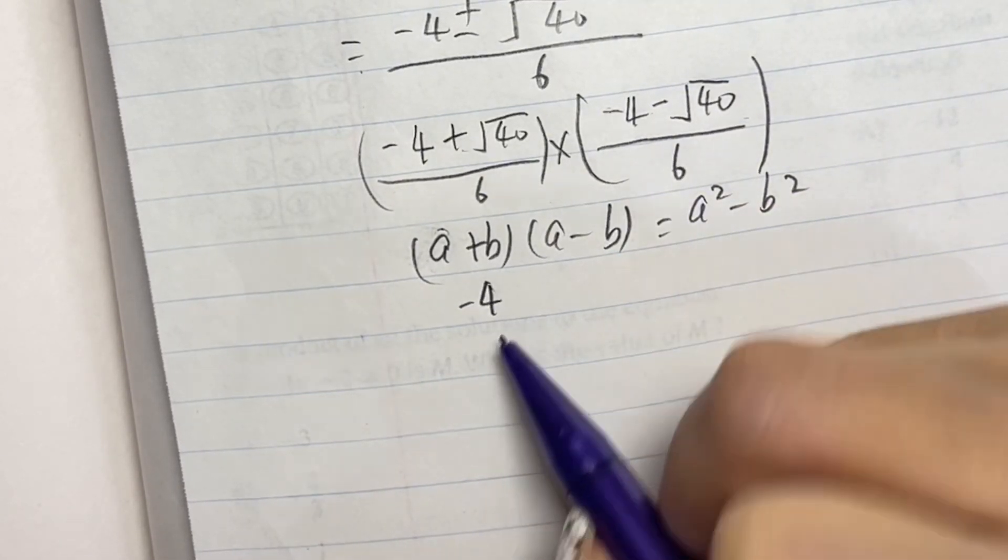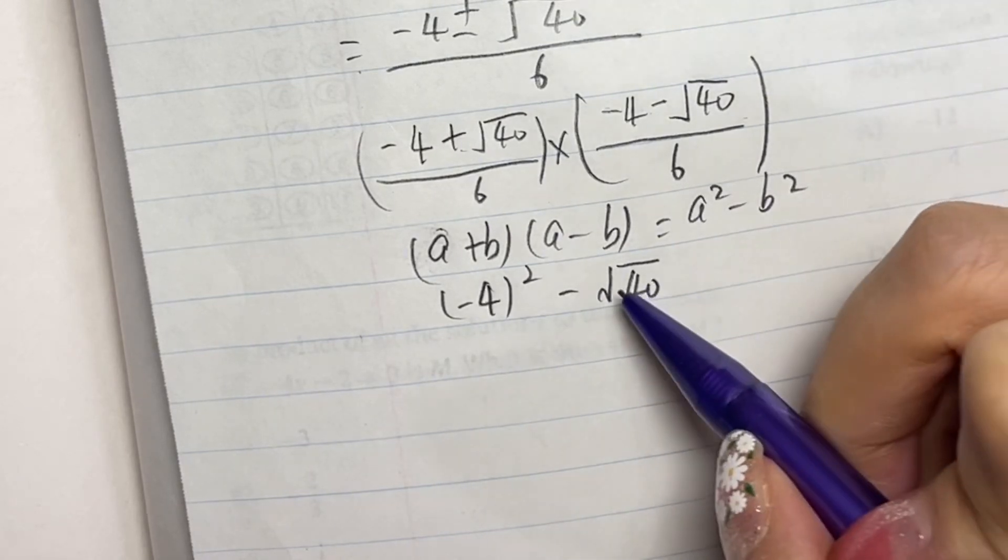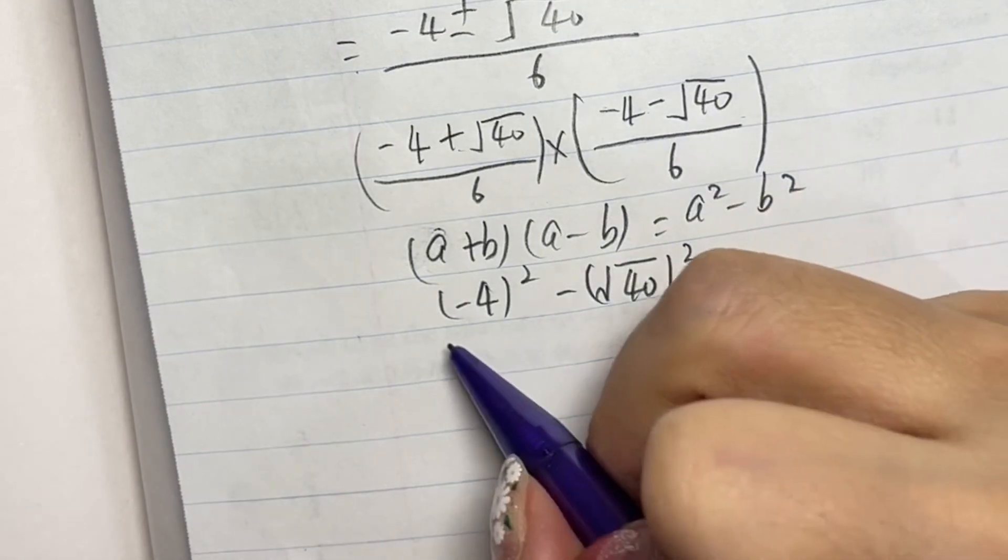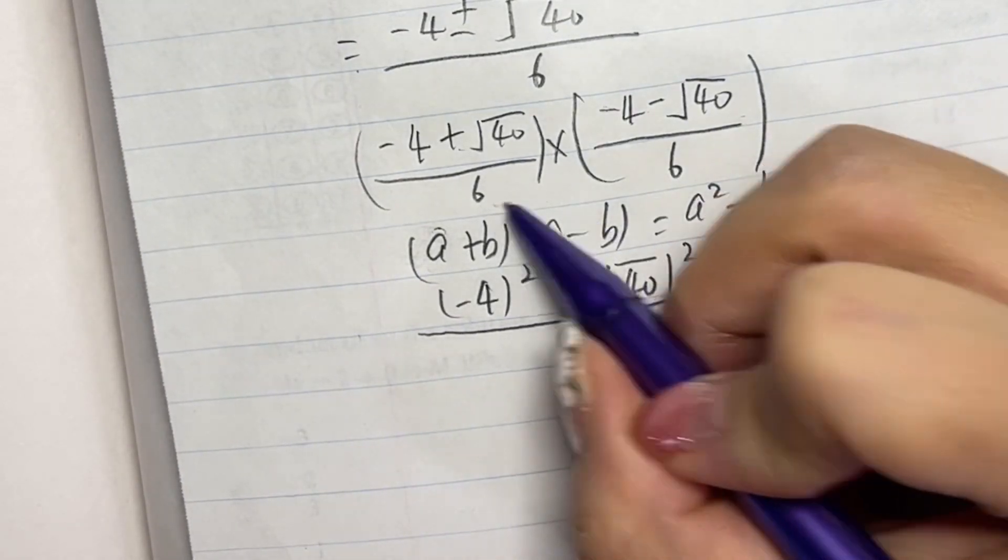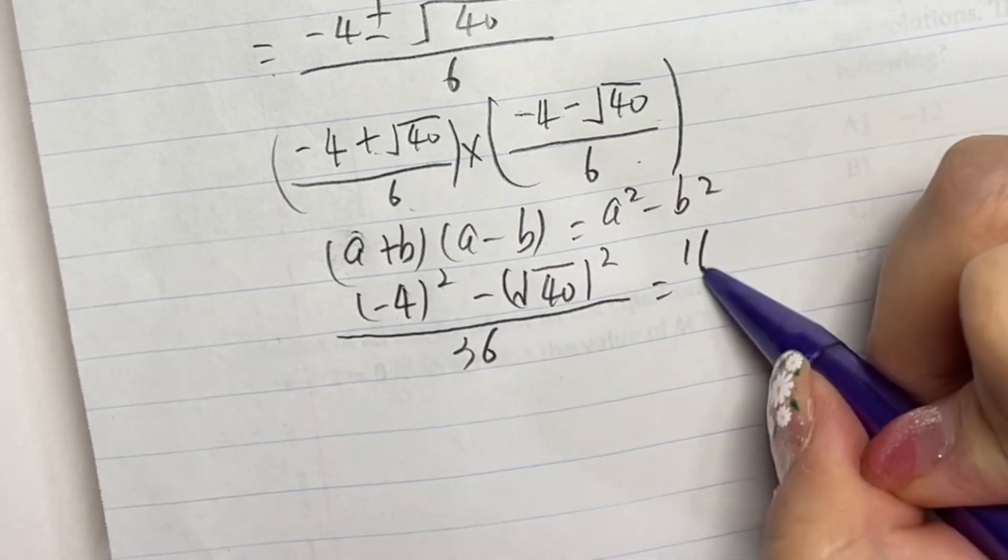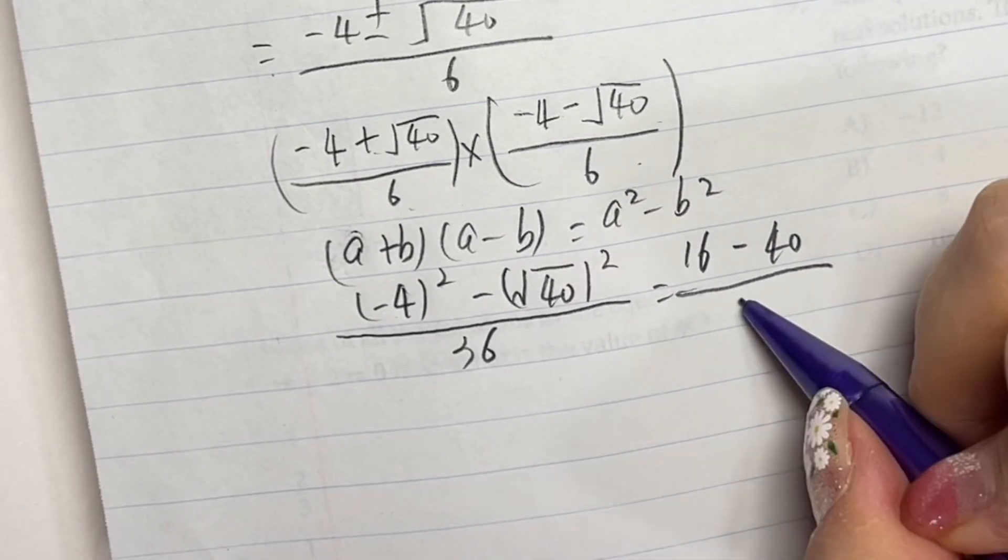So here we use (-4)² - (√40)² divided by 6 times 6 is 36. So what is here? (-4)² is 16 minus 40 divided by 36.